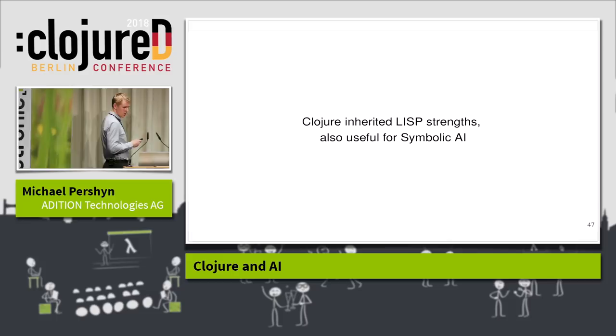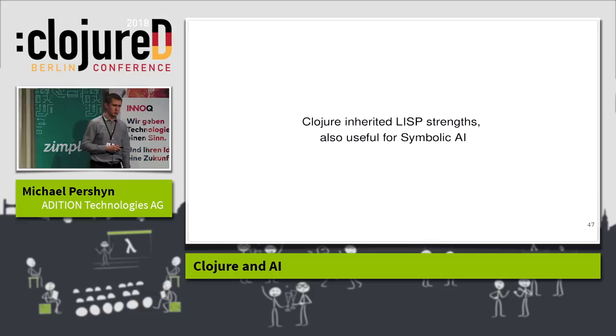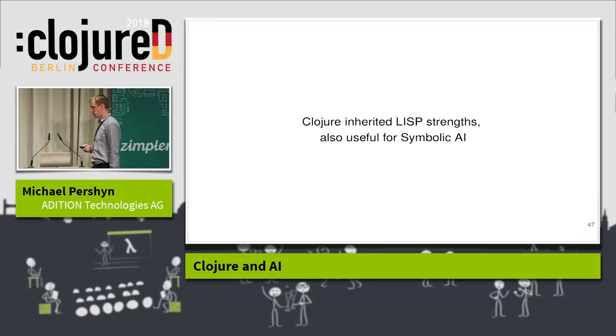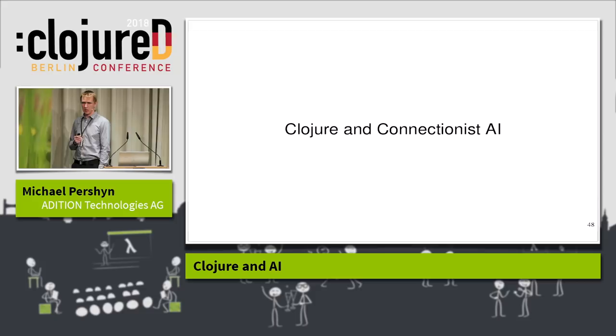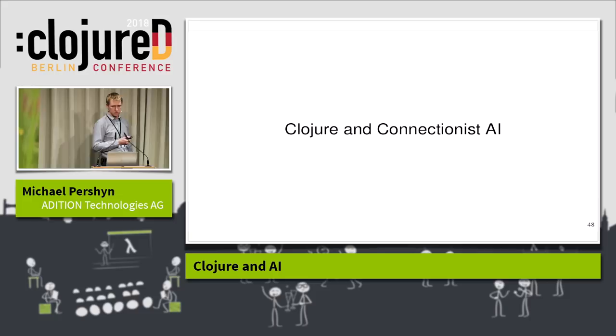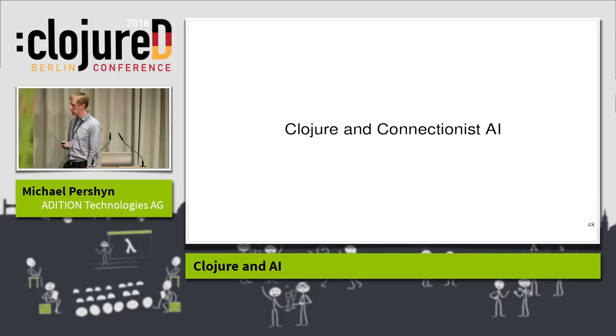Clojure inherited Lisp's strengths and is useful for symbolic AI. But the main strength still there is that Clojure is very good for explorative programming when we don't know what we're looking for — we can play around, fire up the REPL, do things, and see. I find that Clojure is also well represented in evolutionary and statistical AI approaches. There are libraries like Anglican, Incanter, Kixi Stats, and Statistiker, and there are also ways to do genetic programming in Clojure using clojure.spec and other libraries.